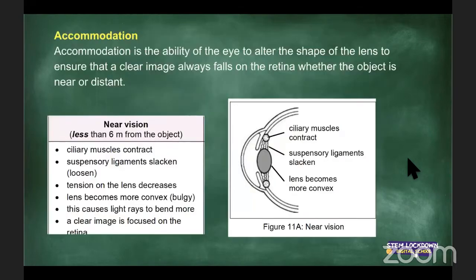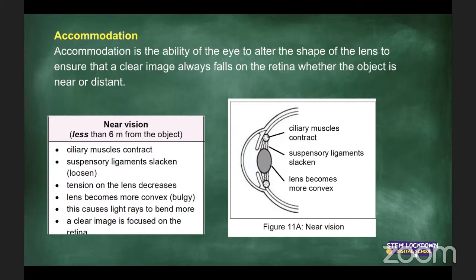Accommodation: just as you accommodate someone by adjusting your behavior, the eye's lens can also accommodate — it can change its shape to adapt when you're looking at an object that is far away or close by.